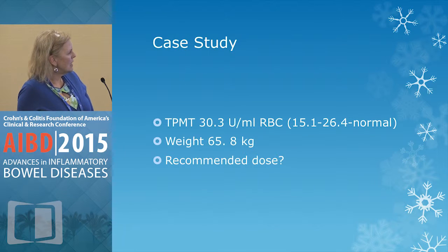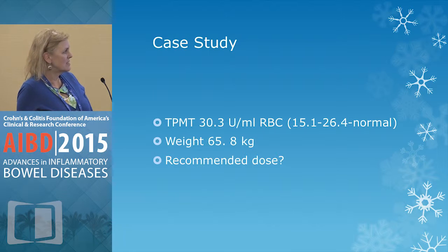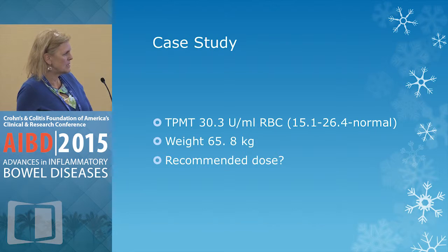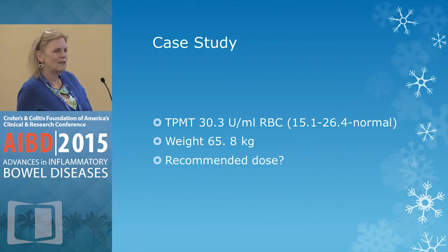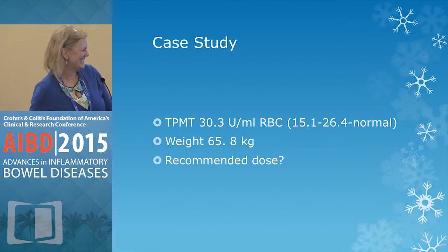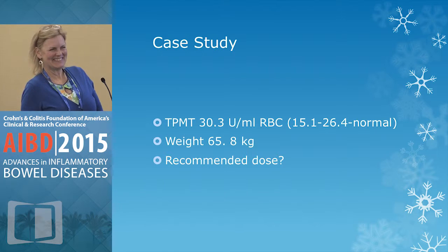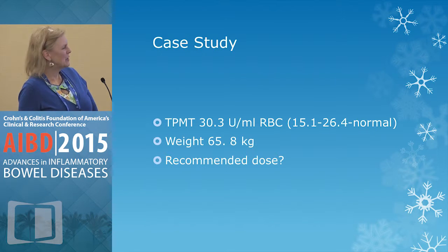She had a TPMT of 30, which is high-normal — the normal range in our assay is 15.1 to 26.4. Her weight is 65.8 kg. So what would her dose be? Probably 125 to 150 mg.